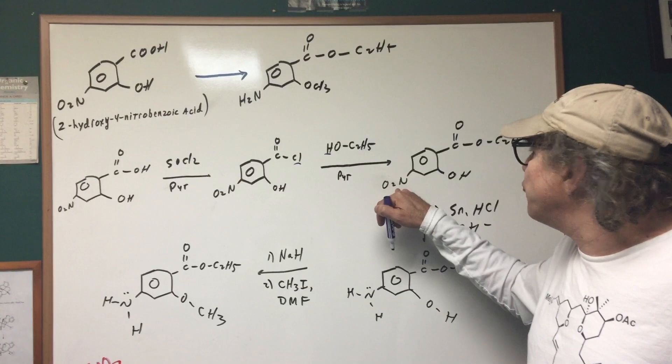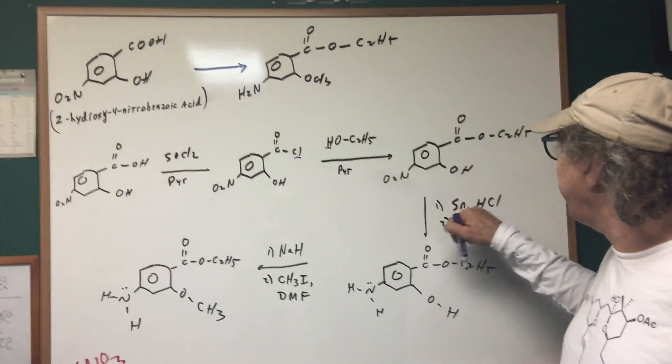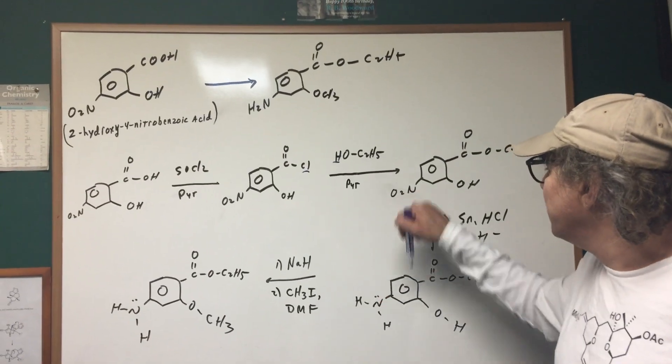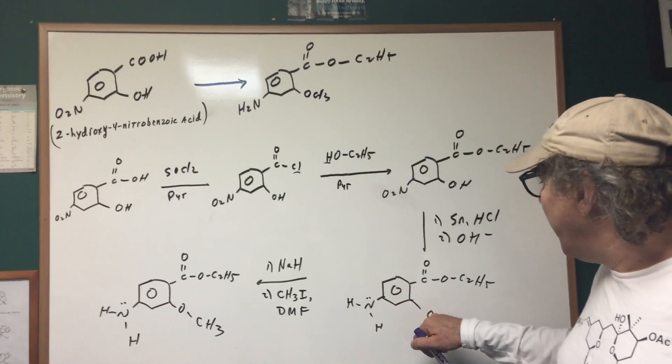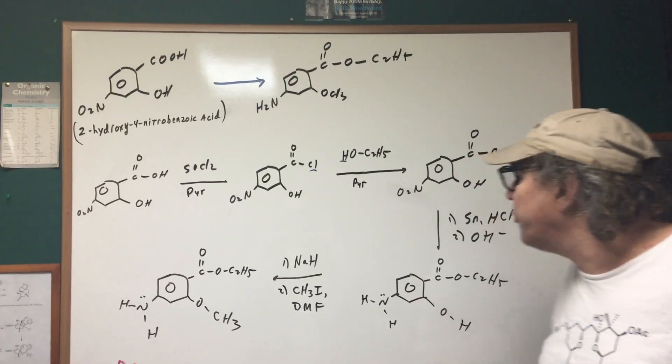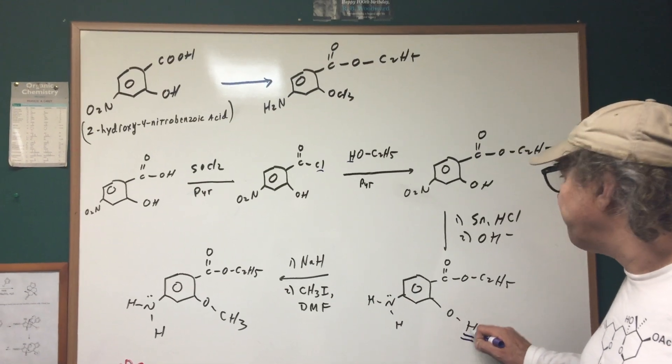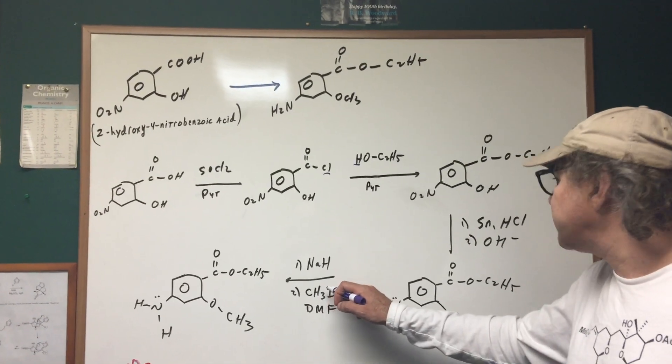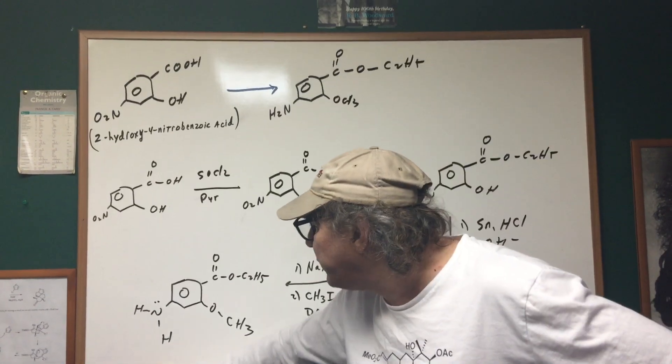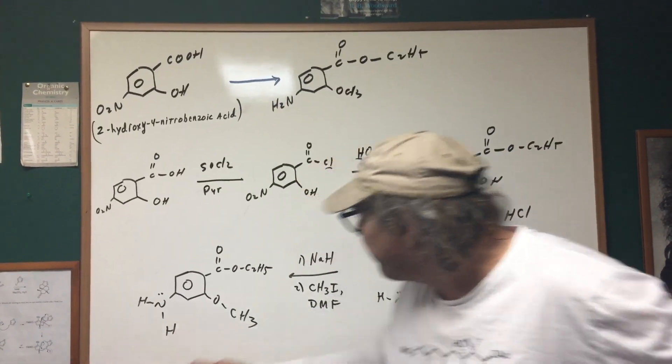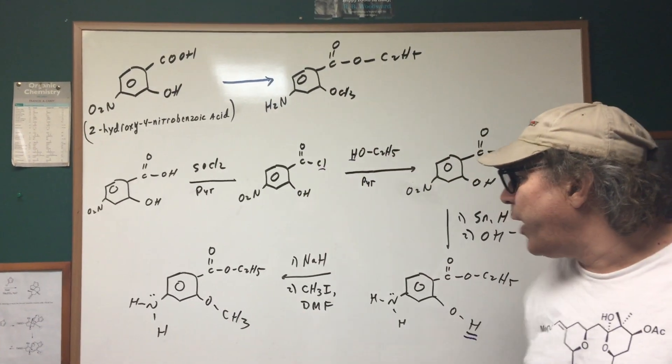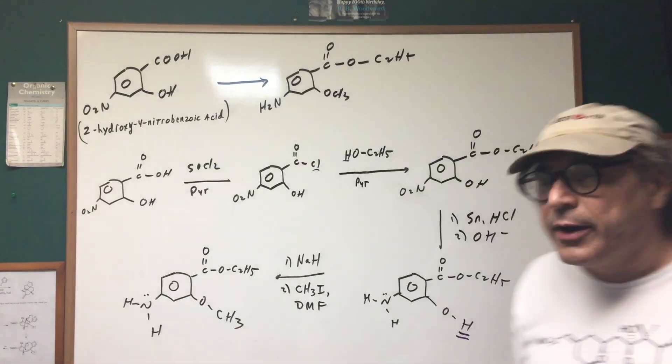Once I did that, I'm going to now reduce down the nitro with tin HCl and base. So the nitro is reduced. And then the final step, I do what's called the Williamson ether synthesis. NaH removes off the acidic proton and then it's captured in an SN2. And I end up getting the final product through a Williamson as my final step.